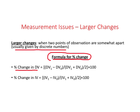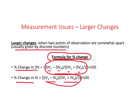The formula for larger changes is as follows. Percent change in dependent variable (DV) will be DV1 minus DV0 in the numerator divided by the average of DV1 and DV0 — that is, DV1 plus DV0 divided by 2 — and this whole expression is multiplied by 100. Similarly, percent change in independent variable will be the difference between the two values divided by the average of the two values, times 100. Subscript 0 refers to the initial observation and subscript 1 refers to the final observation.